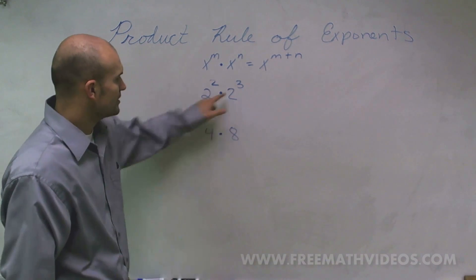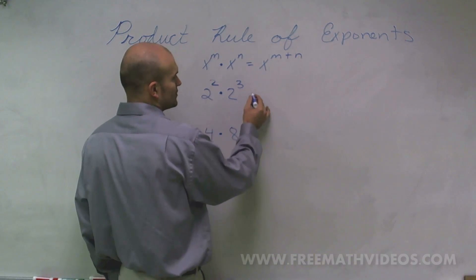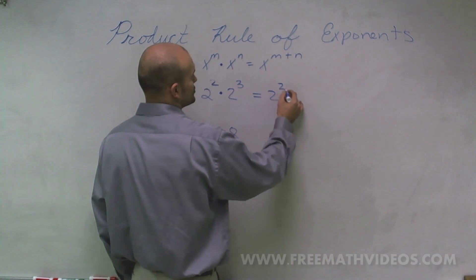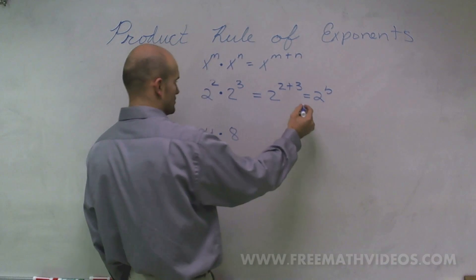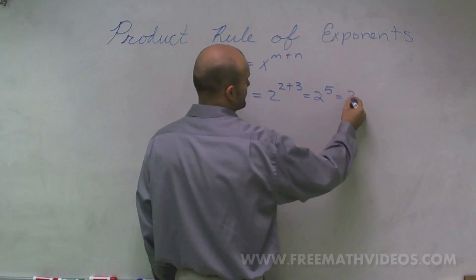So if we look at this, when I do 2 squared times 2 cubed, by using the product rule of exponents, what that represents is 2 to the 2 plus 3, which equals 2 to the 5th, which equals 32.